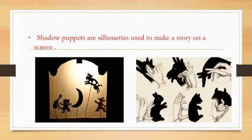Why are they using the shadow puppet? The shadow puppet — we know that, we have all made one before. The shadow puppets are still hearts. They create a solid image, a dark shape, a dark shadow. They are used to make a story on the screen.